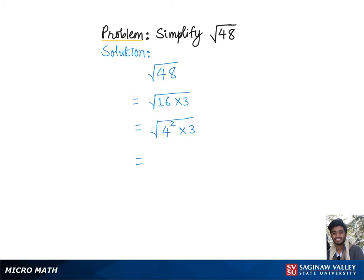Now this 4 squared can be pulled out of the square root as simply 4, and then we are left with root 3. Thus 4 root 3 is the final answer.